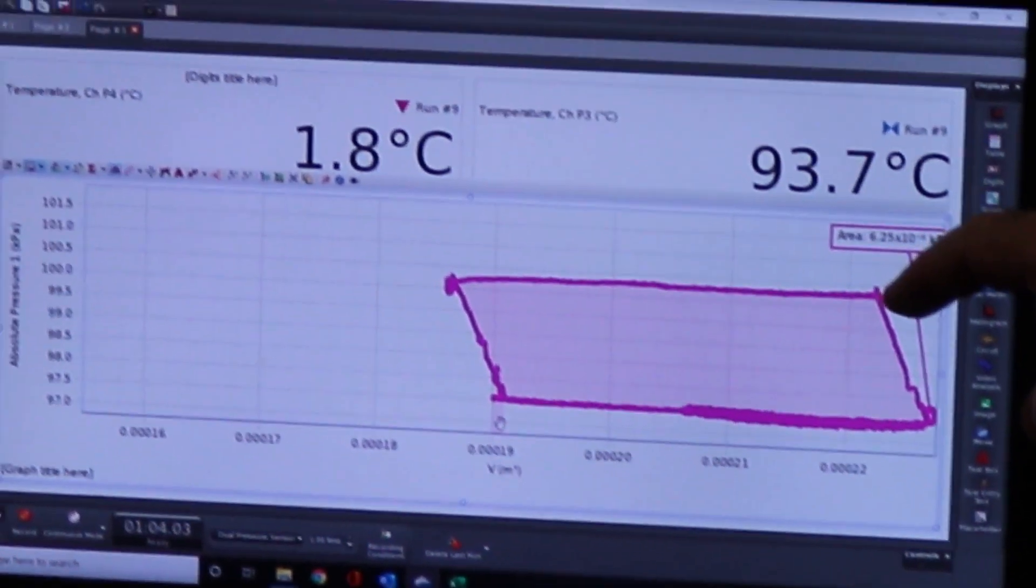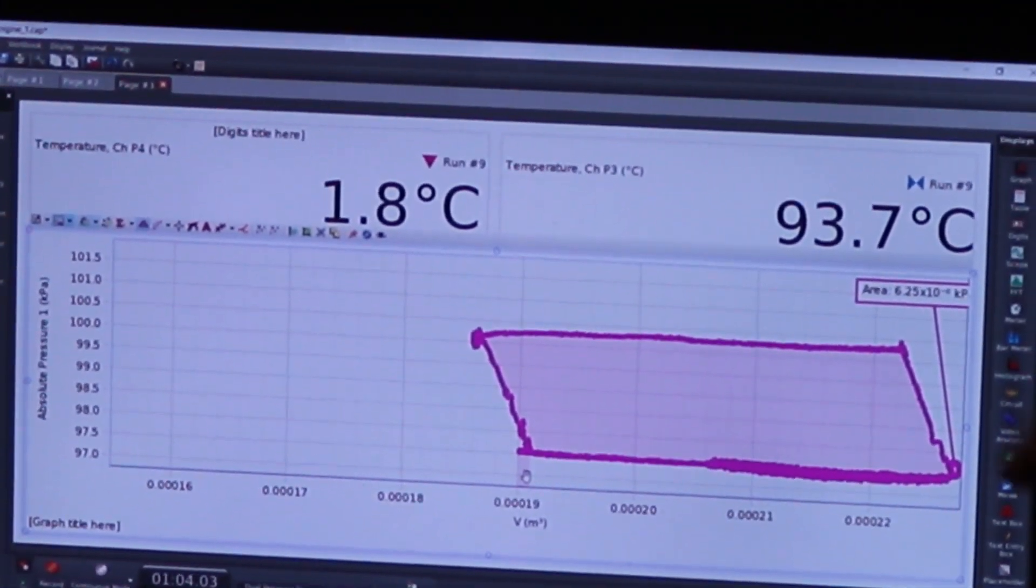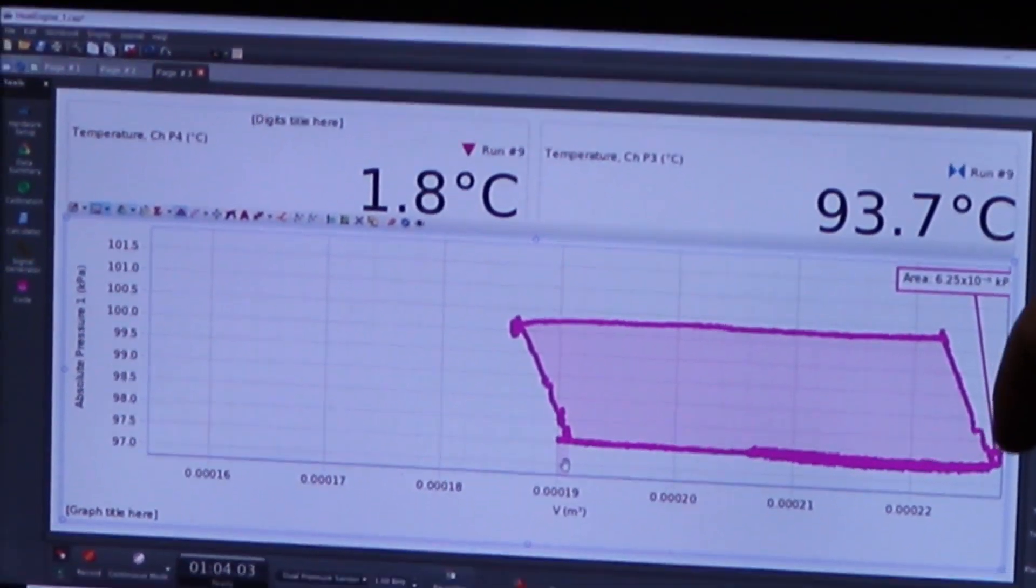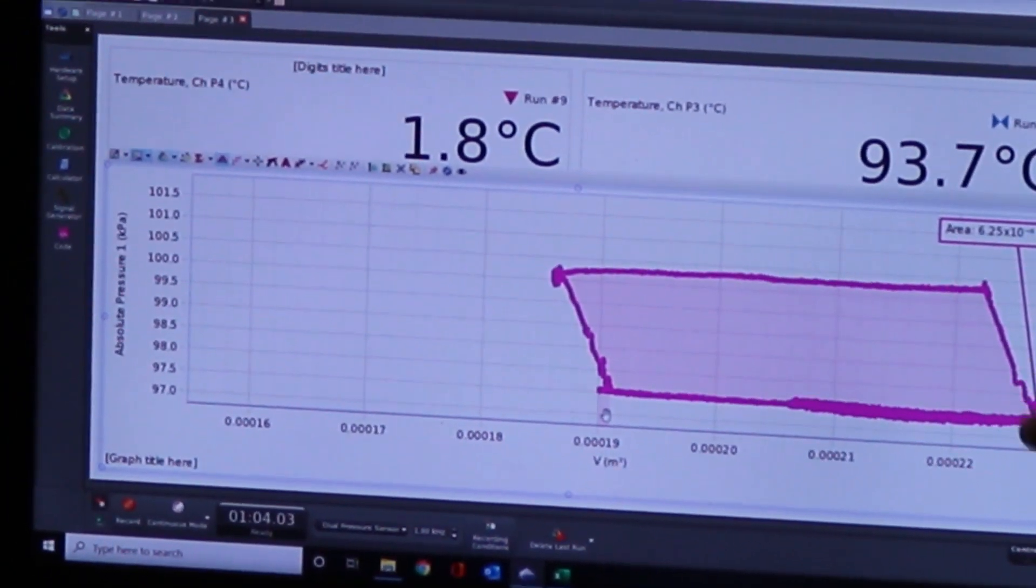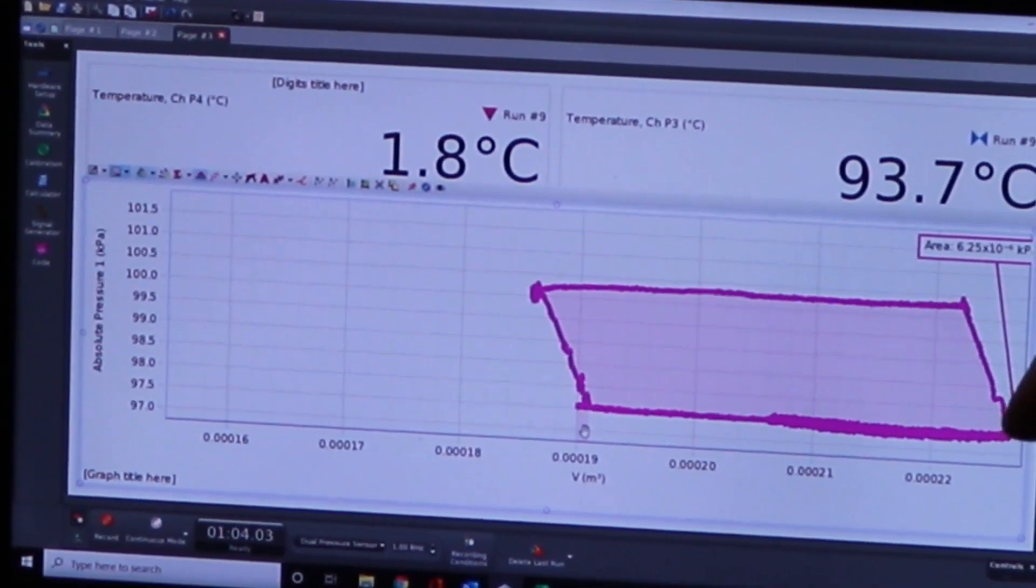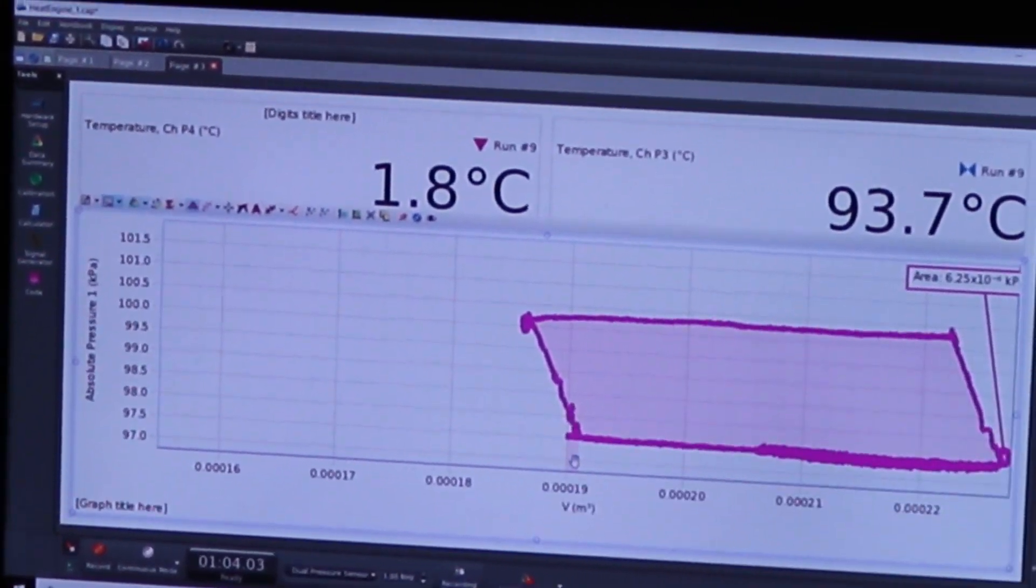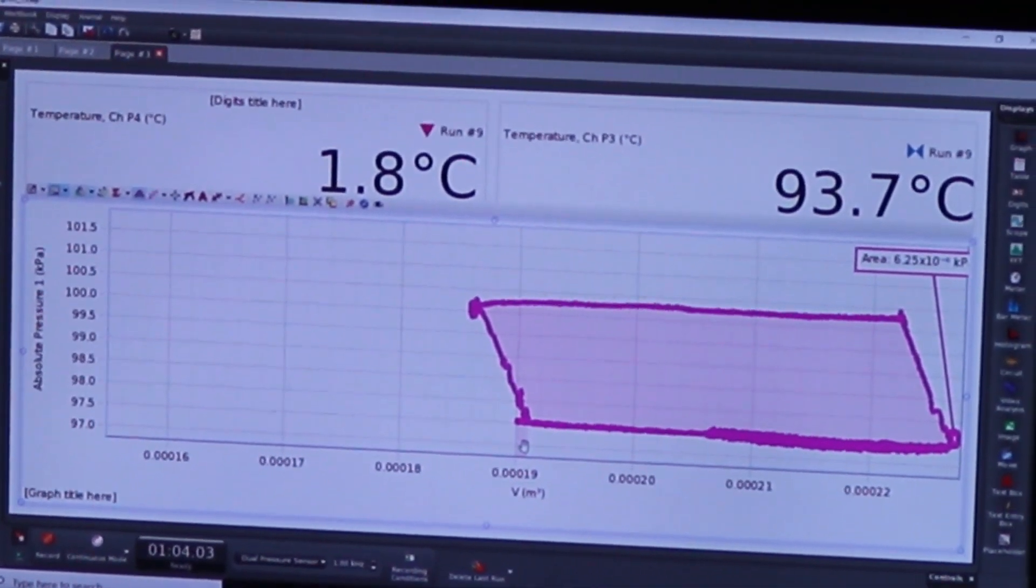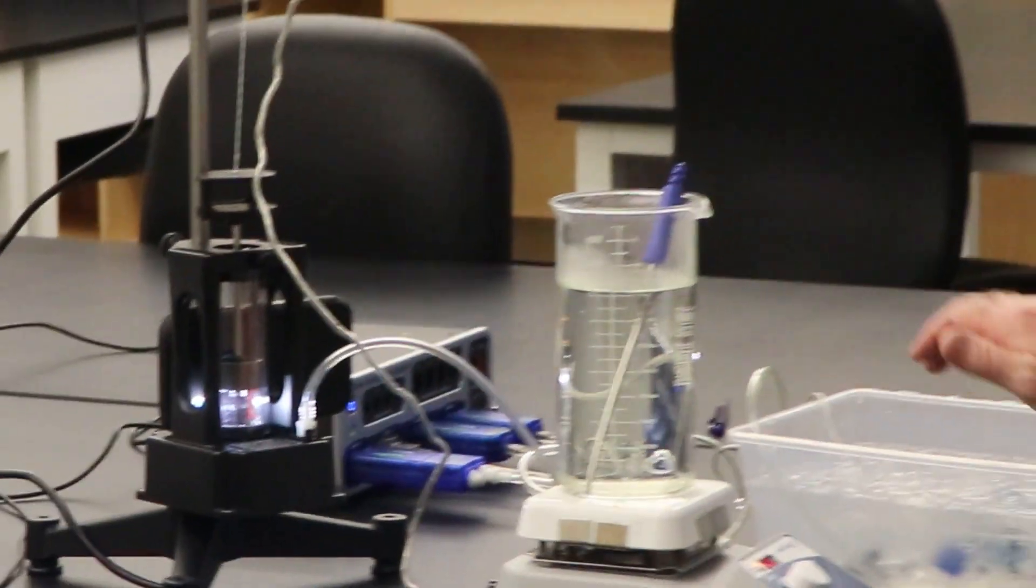This is isothermal down to this point here, you see the volume is increasing, the pressure is going down, and then we transfer it back to the cold reservoir. The volume increased as the pressure went down, and then isobaric all the way back to the beginning. The volume's decreasing and the temperature is decreasing because it's going back into this cold reservoir right here, and so that's it, that's the whole process of measuring a thermodynamic cycle.